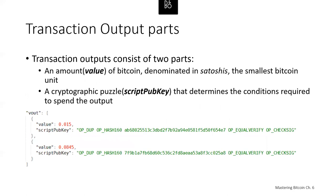UTXOs are tracked by every full-node Bitcoin client in the UTXO set. New transactions consume one or more of these outputs. Transaction outputs consist of two parts: an amount of Bitcoin denominated in Satoshis, which is our smallest Bitcoin unit, and a cryptographic puzzle that determines the conditions required to spend the output. The cryptographic puzzle is also referred to as a locking script, a script pub key, or a witness script.